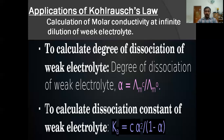The third application is to calculate the dissociation constant of weak electrolytes. For example, for weak acids, Ka equals C·α² divided by (1 − α). Since the degree of dissociation of weak acids is low, (1 − α) can be approximately taken as 1, so we generalize Ka ≈ C·α². These three are the important applications of Kohlrausch's law.